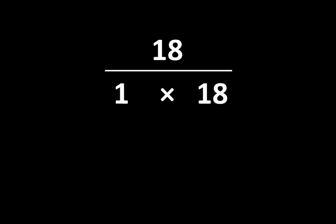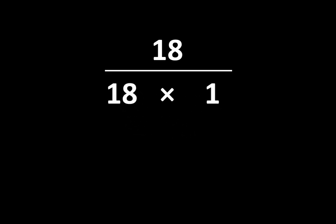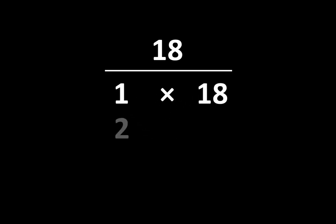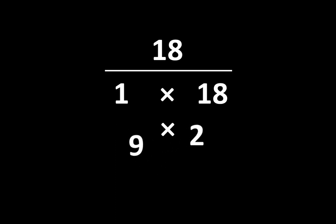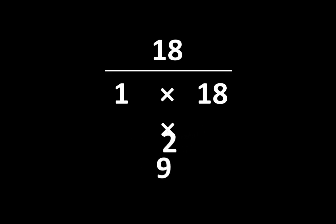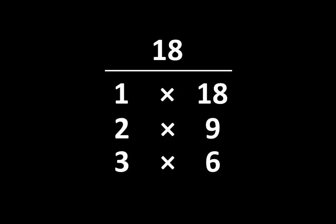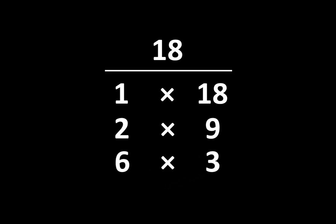Let's examine the number eighteen. We know that eighteen is equal to one times eighteen, so we also know that it is equal to eighteen times one. Eighteen is also equal to two times nine, so we know that nine times two is equal to eighteen. Eighteen is also equal to three times six, so we know that six times three is equal to eighteen.